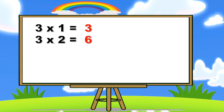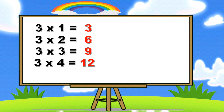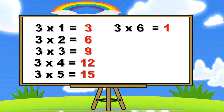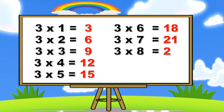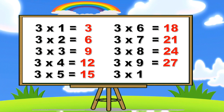Three ones are three, three twos are six, three threes are nine, three fours are twelve, three fives are fifteen, three sixes are eighteen, three sevens are twenty-one, three eights are twenty-four, three nines are twenty-seven, three tens are thirty.